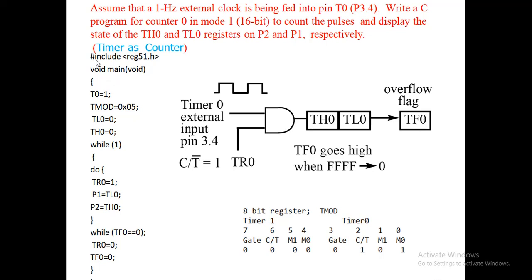Now look at the program. Write a program for counter 0 in mode 1 (16-bit) to count pulses and display the state of TH0 and TL0 registers on P2 and P1. The counter value will be displayed on P1 and P2. You can also connect an LCD display to any port. Because it is a 16-bit timer, the display value ranges from 0 to 65535, which is why we use both P1 and P2.